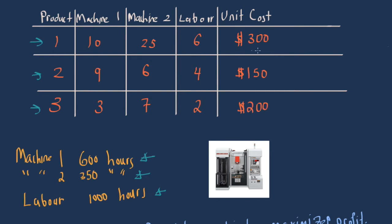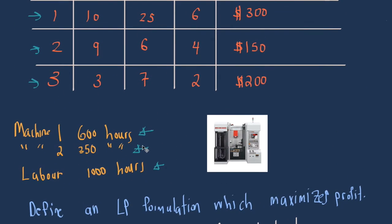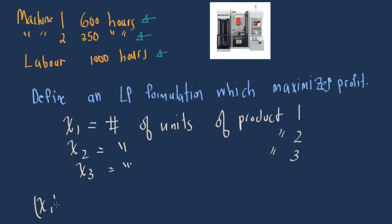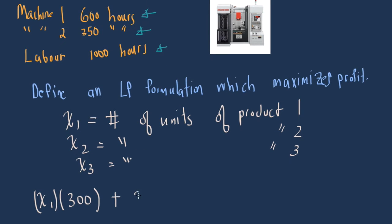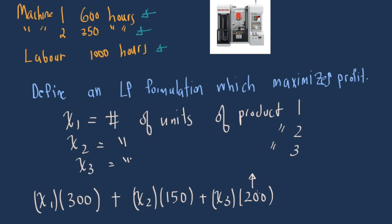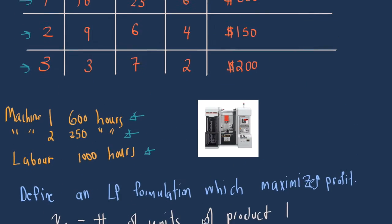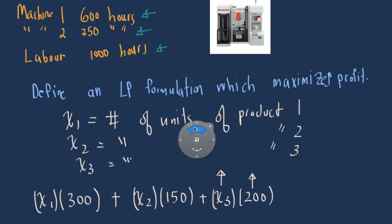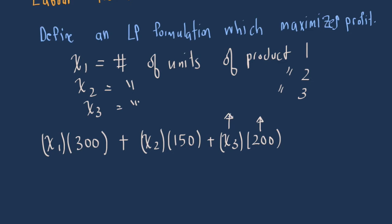The total revenue we would make is x1 times $300 from product one, plus x2 times $150 from product two, plus x3 times $200 from product three. So the revenue equation is 300·x1 plus 150·x2 plus 200·x3, since these are the per-unit revenues and the x variables represent the number of units produced. That gives us total revenue.